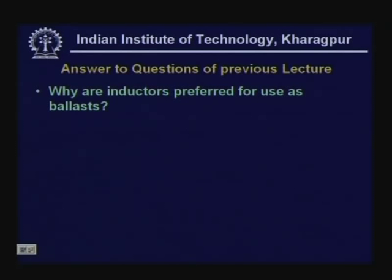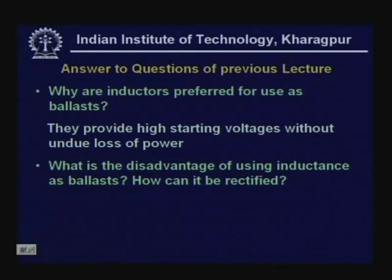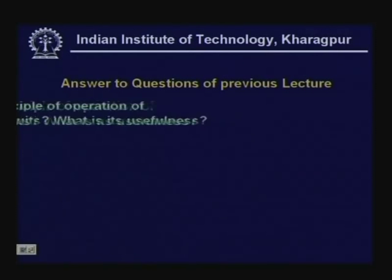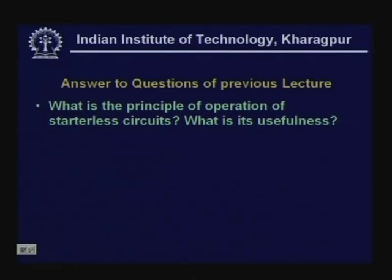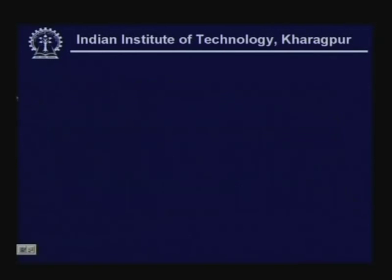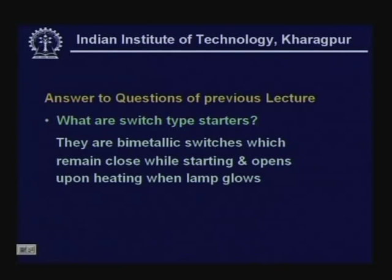Some questions from the last lecture: Why are inductors preferred for use as ballast? They provide high starting voltage without undue loss of power. What is the disadvantage of using inductance as a ballast, and how can it be rectified? Inductances have low power factor, which is undesirable; hence series capacitors or lead-lag circuits are used for improving power factor. What is the principle of operation of a starterless circuit and its usefulness? They work on the principle of semi-resonant circuits, employ preheated filament electrodes drawing small voltage, and are useful for smooth operation of discharge lamps at extreme cold conditions. Switch-type starters are bi-metallic switches — they remain closed while starting and open upon heating when the lamp glows.